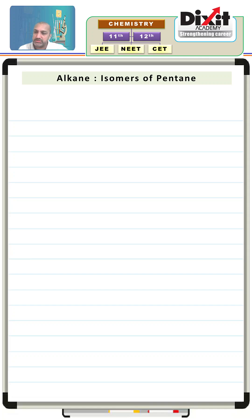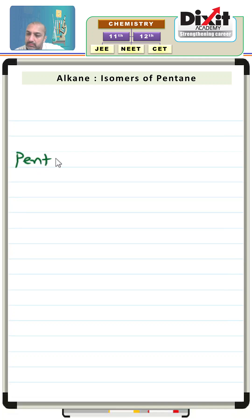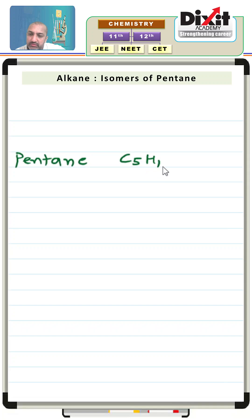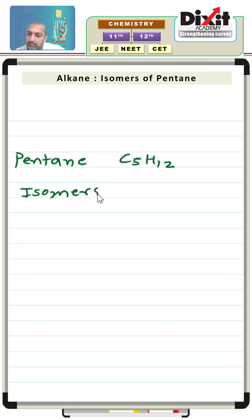Next question: discuss isomers of pentane. Write down the answer. Pentane molecular formula is C5H12. Total isomers for pentane are 3.